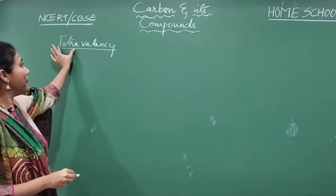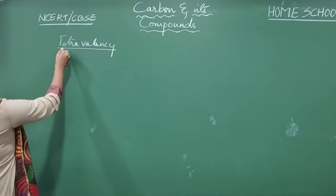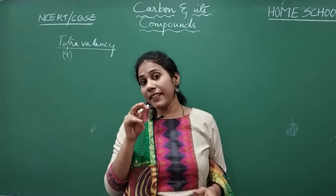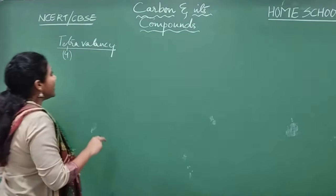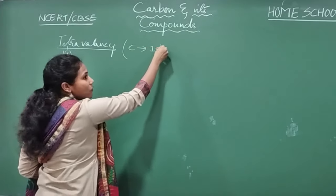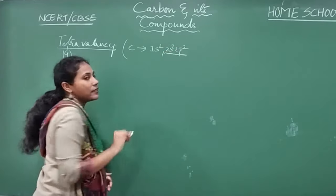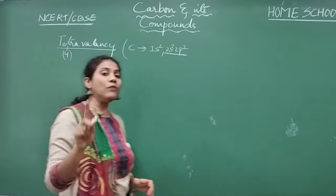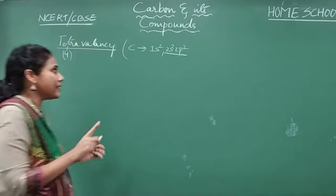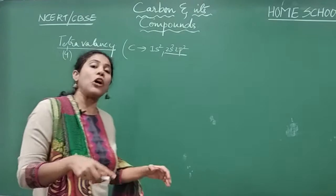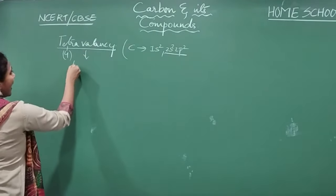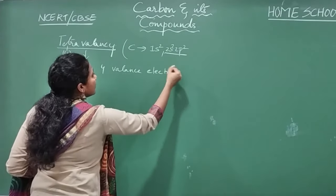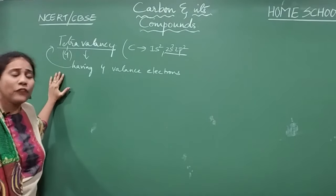Let us discuss what we mean by tetravalency. The meaning of the word 'tetra' is 4, and here 'valency' means the number of electrons present in the valence shell. The electronic configuration of carbon is 1s2, 2s2, 2p2. The valence shell is the second shell, which has 2 plus 2 — that is 4 electrons. Carbon has 4 valence electrons, and that is what we call tetravalency. Having 4 valence electrons is called tetravalency.